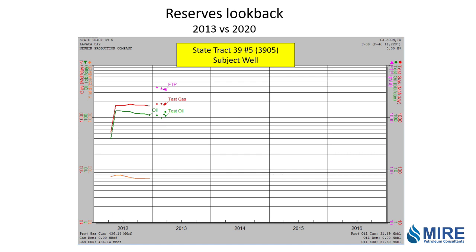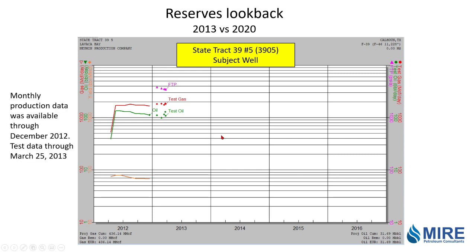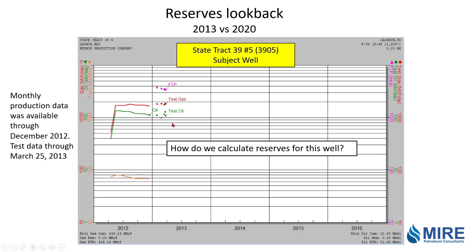Here's the producing well that we want to do reserves on. This is a production plot — gas, oil, and condensate yield versus time, a semi-log plot — with the monthly production on the solid lines and the test data as points out into 2013. The well is not really showing a decline right here, so it would really be hard to do decline curve analysis reserves.